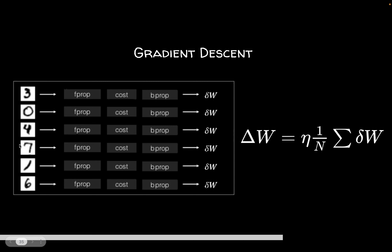Let's look at the idea of gradient descent again. Say you have all your inputs — these handwritten digits are called MNIST, a very popular toy dataset. Even though these are images, you can flatten them as one long set of values and treat them as 784 inputs. We do the forward propagation, compute the cost, then do the backward propagation to compute the gradient.